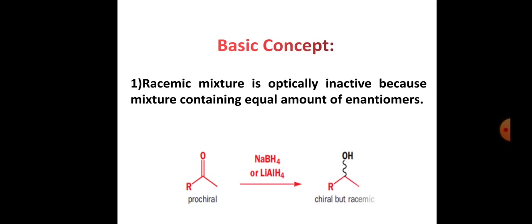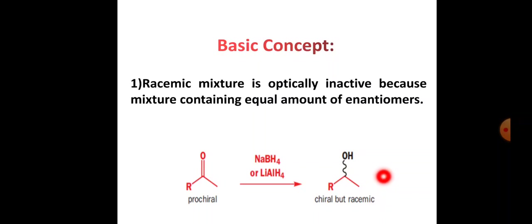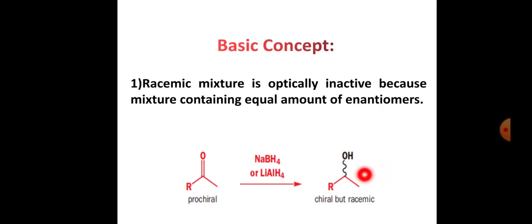A simple example: this is a ketone, and it is prochiral. On treatment with a reducing agent — that is NaBH4 or LiAlH4 — the ketone is converted into a secondary alcohol. The final product is chiral but racemic. We get the racemic mixture, therefore the racemic mixture is optically inactive, because the mixture contains equal amounts of enantiomers.